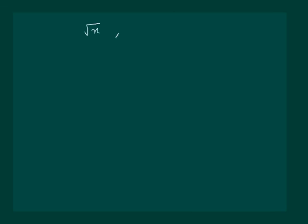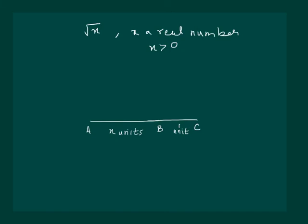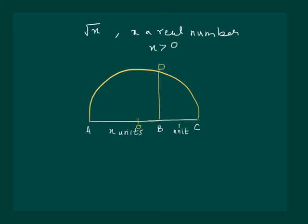In general, to find root of x where x is a real number greater than 0: draw AB equal to x units, then mark C so that BC is equal to 1 unit. Then mark point O such that it is the center of AC, and draw a semicircle with O as center and OC as radius. Then draw a perpendicular to AC at point B and let it intersect the semicircle at point D. Then measure BD, and we have BD is equal to root x.